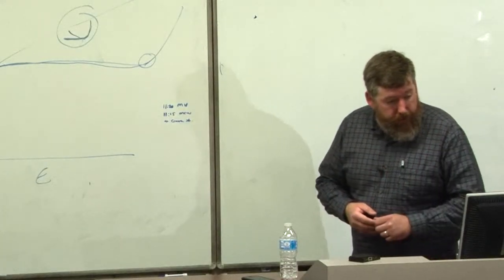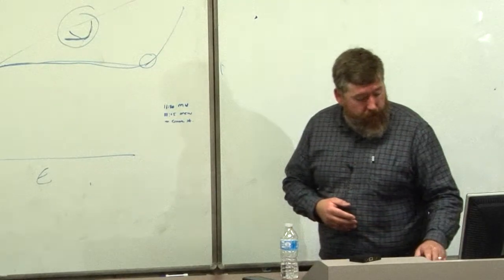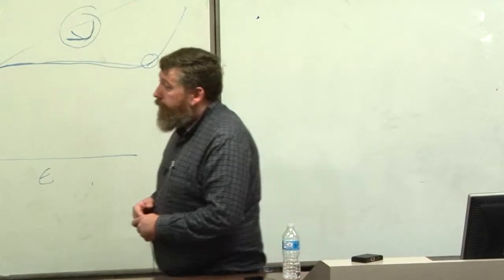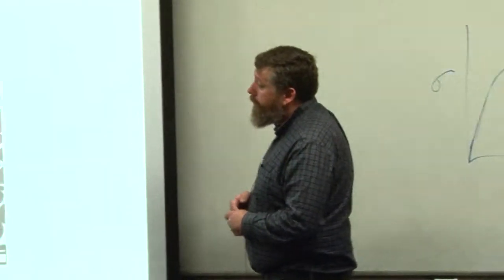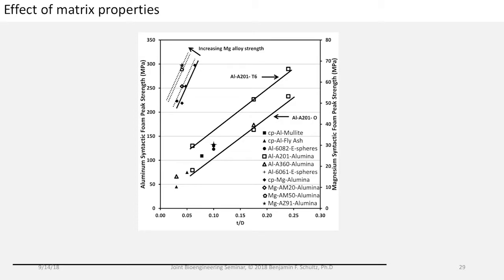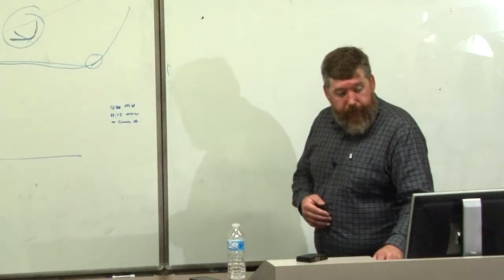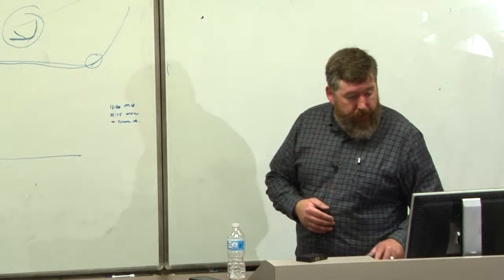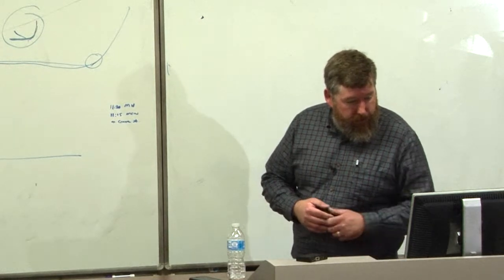I already mentioned the effect of matrix properties. So this is three different compositions and three different treatments, heat treatments. As-cast, T4 and T7 are different solutionizing heat treatments and aging heat treatments. And we see increased mechanical properties with the heat treated composites compared to the as-cast composites.